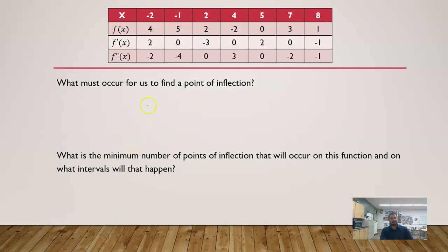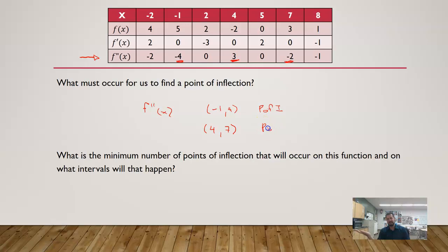In order for us to have a point of inflection, the second derivative has to change signs. If I'm asking about the second derivative, I can see that my second derivative value is negative there and positive there. So somewhere between negative 1 and positive 4, I'm going to have a point of inflection — I don't know where. I'd like to say it's at x equals 2, but I can't say that for sure. Also, between positive 4 and positive 7, my second derivative values change from positive to negative. Somewhere along the line, I have a second point of inflection. So the minimum number of points of inflection is 2 in this case. I could have more because I don't know what this function looks like, but at the very least I can have 2 of them occurring.